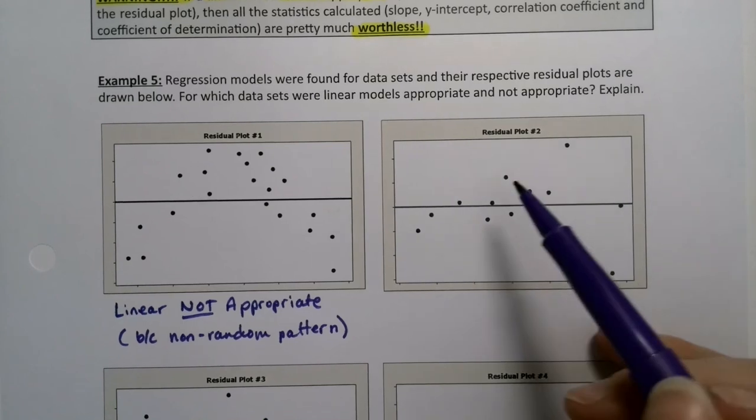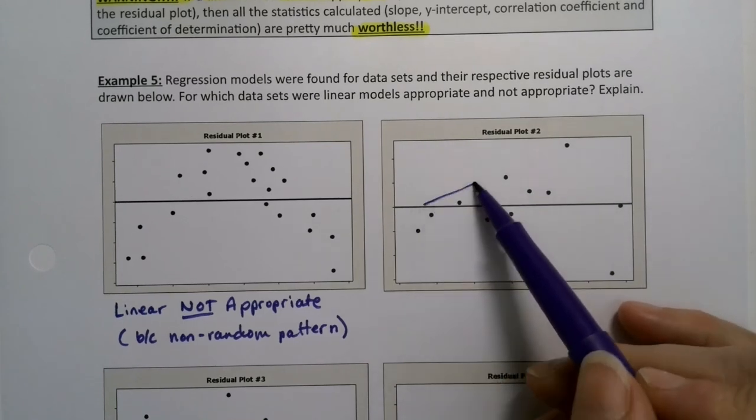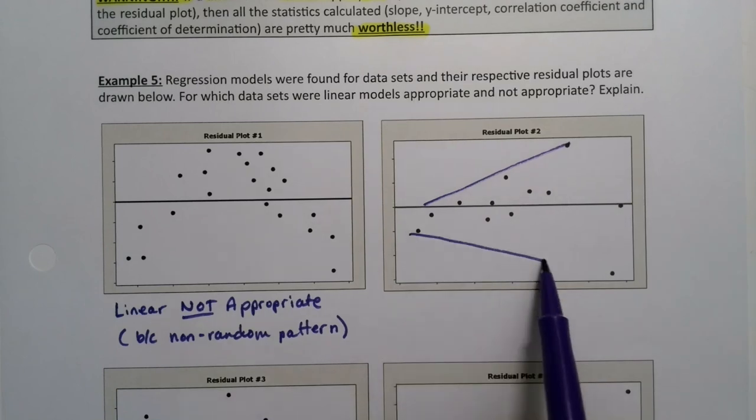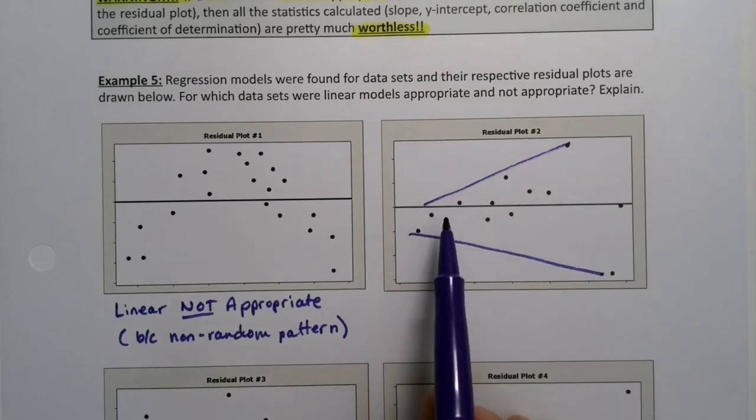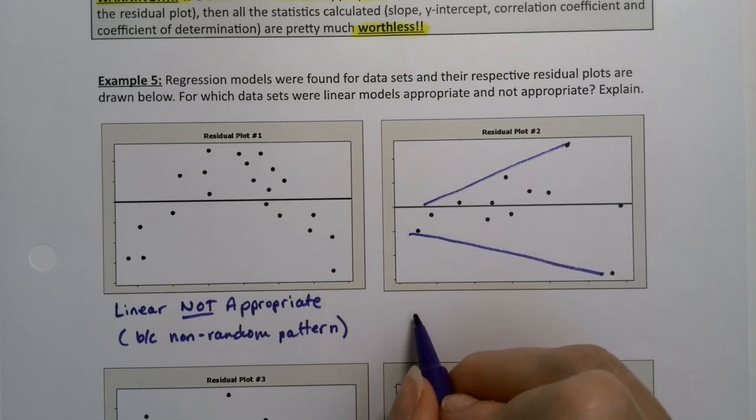What about this particular one? Well, this has the problem of having it does not have constant error variance. It's getting worse and worse. So, you're starting off close. And you're getting farther and farther and farther away. That's a cone shape or a horn shape. So, this is not linear model, not appropriate also.